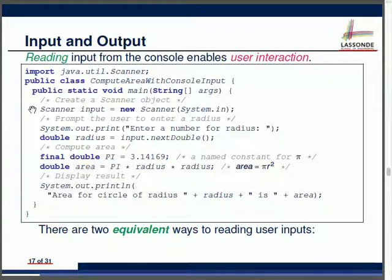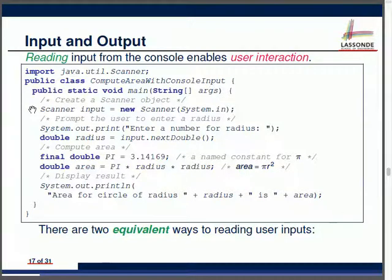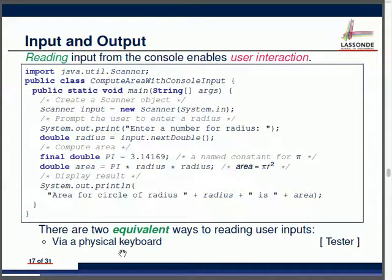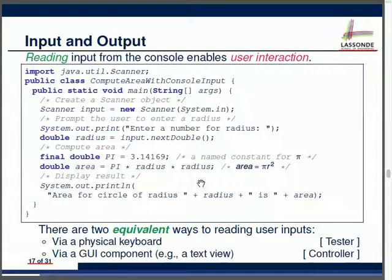For Android app development, your final product lets the user enter input using the mobile screen keyboard. When you're developing and testing, use the Scanner. There are two equivalent ways of reading user input: a physical keyboard using Scanner in your tester, or reading from a text field using its GUI component ID, which you learned in tutorial. There are three common Scanner methods: nextInt, nextDouble, and nextLine.